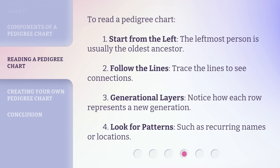To read a pedigree chart: 1. Start from the left — the leftmost person is usually the oldest ancestor. 2. Follow the lines — trace the lines to see connections. 3. Generational layers — notice how each row represents a new generation. 4. Look for patterns, such as recurring names or locations.